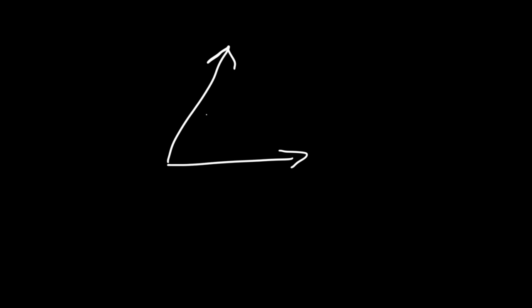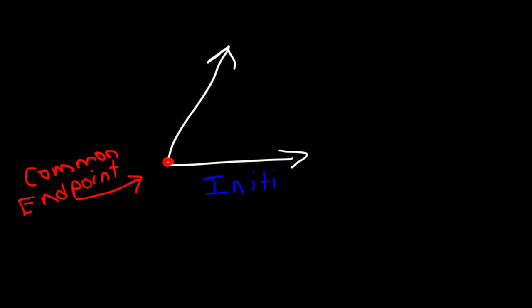When we're talking about angles, an angle is formed between two rays, and it has a common endpoint — which is the vertex of the angle. The first ray is known as the initial side. The second ray is known as the terminal side. The angle, which we can call theta, is measured from the initial ray to the terminal ray.